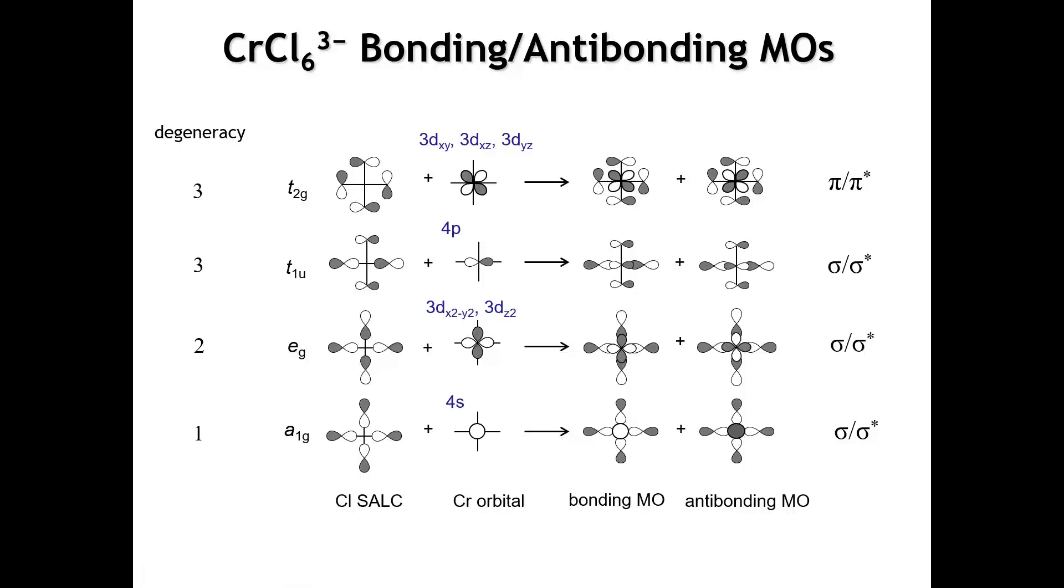Let's stop and count up how many orbitals we've used here. The ones that have a T label are triply degenerate. The ones that have an E label are doubly degenerate. And the ones that have an A or a B label are singly degenerate. So we've used 3, 6, 8, 9. We've used 9 chromium orbitals and 9 ligand SALCs. There were only 9 orbitals on chromium to begin with, so we've used all of the chromium orbitals up, but we've only used half of the 18 chlorine-based SALCs.